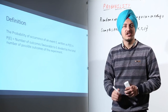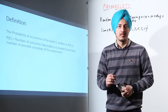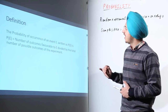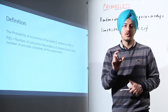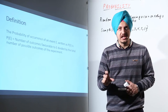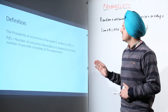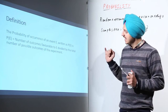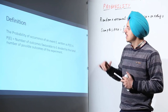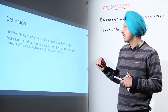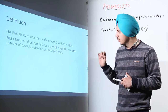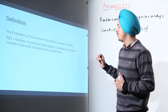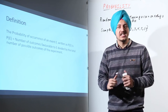Now what is the definition of probability? The probability of occurrence of an event E, written as P(E), is equal to the number of favorable outcomes for E divided by the total number of possible outcomes of the experiment.